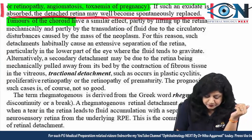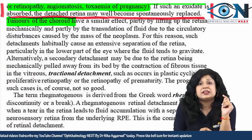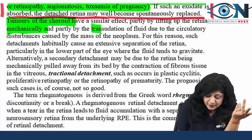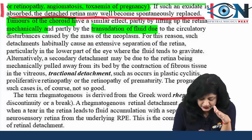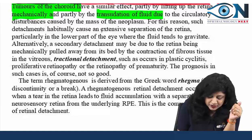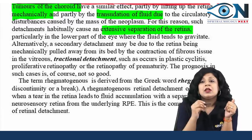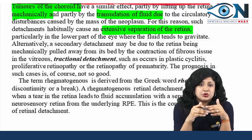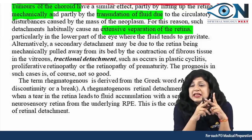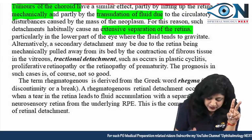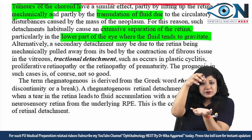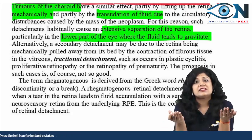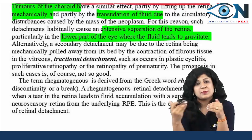Choroidal tumors lead to retinal detachment both mechanically and through transudation of fluid due to circulatory disturbances, causing extensive separation of the retina, particularly in the lower part of the eye because fluid tends to gravitate to the bottom. So extensive detachment is more expected toward the lower side.